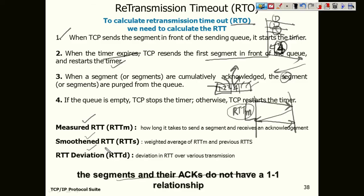Because RTD_M will not be the same every time, we calculate a smoothed RTD (RTD_S) as a weighted average of the current measured RTD and the previous smoothed RTD. We also consider deviation (RTD_D) to account for how these values fluctuate across transmissions. All three types of RTD are taken into consideration when calculating the effective RTO at any point in time.